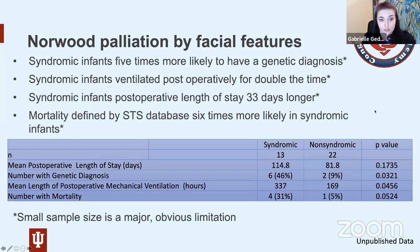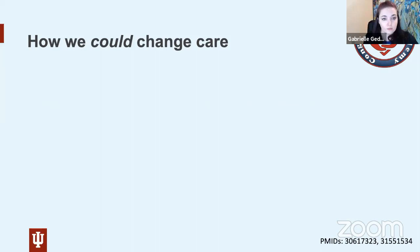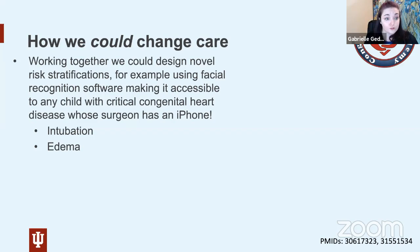This brings us back to how we could change care. You might say: that's great you can look at facial features, but you're in the Midwest, not at my center, so that can't help me. Well, maybe it can — working together we could design novel risk stratifications, for example using facial recognition software, making it accessible to any child with critical congenital heart disease whose surgeon has a smartphone.